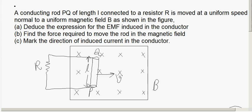Here PQ is a conductor moved in a uniform magnetic field with velocity V, and we get an induced EMF. We have a question to find the expression for the induced EMF. In this case, the EMF is induced due to change in flux.